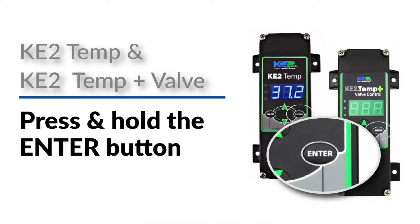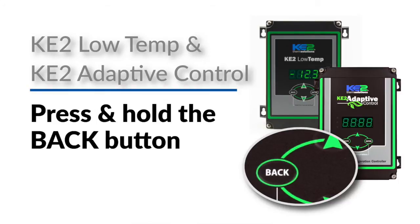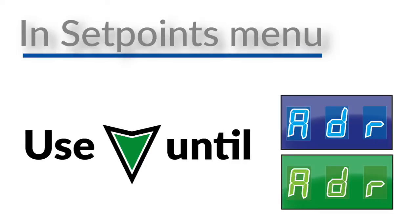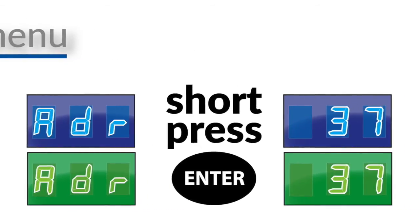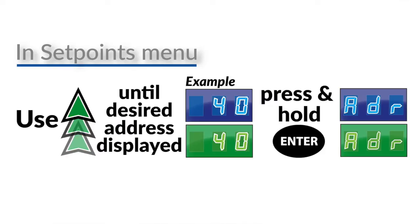To change the controller's address, press and hold the Enter button on the key-to-temp plus defrost or key-to-temp plus valve, and press and hold the Back button on the key-to-low-temp or key-to-adaptive controllers. Once you have entered the set points menu, use the down arrow until ADR is displayed on the screen. A short press on the Enter button toggles to the current value. Use the up arrow until the desired value is displayed. Press and hold the Enter button until ADR is back on the screen and your set point is saved and you're all set.